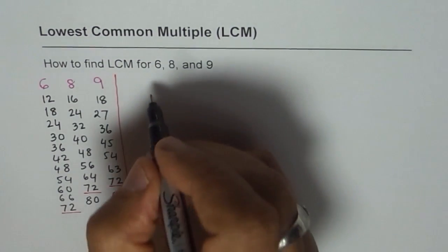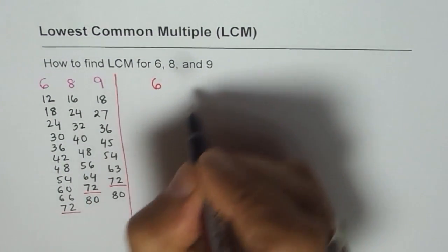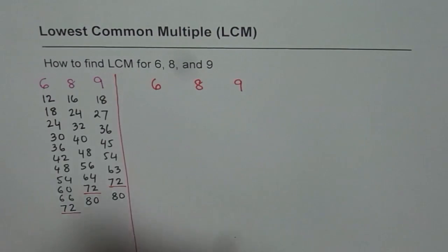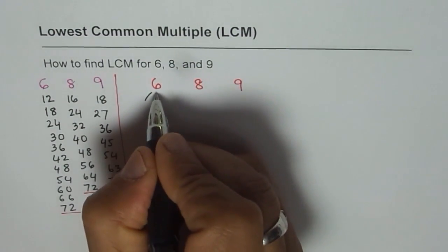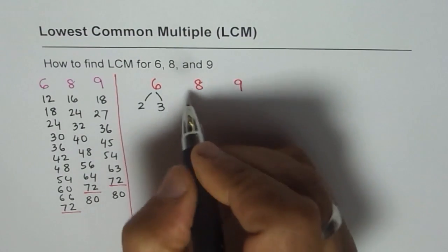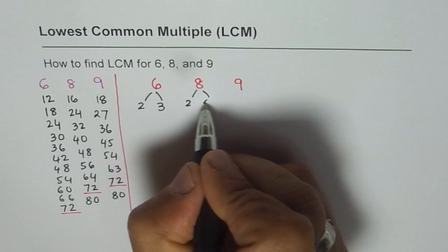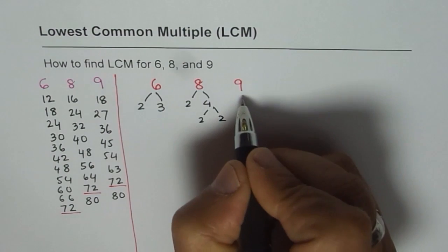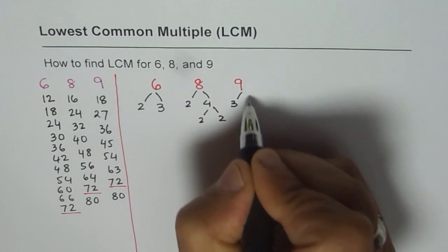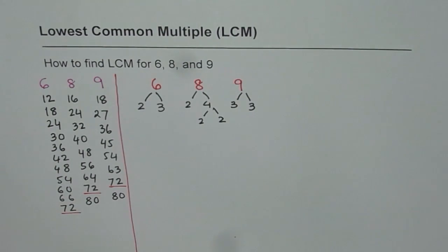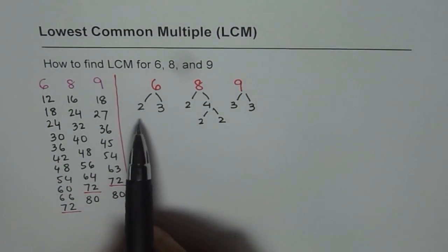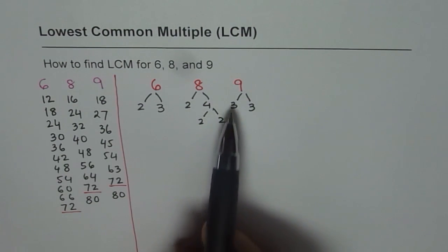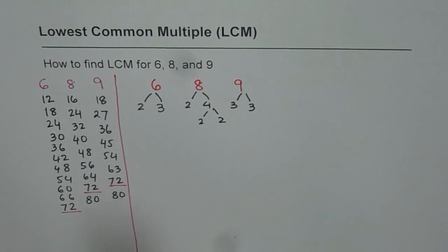Let me show you that method now. We are considering 3 numbers: 6, 8 and 9. Let us find their prime factors. For 6, the factors are 2 times 3. For 8, it is 2 times 4, and I can write 4 as 2 times 2. For 9, it is 3 times 3. So we get factors of 6 as 2 times 3, factors of 8 as 2, 2 and 2, and factors of 9 as 3 times 3.